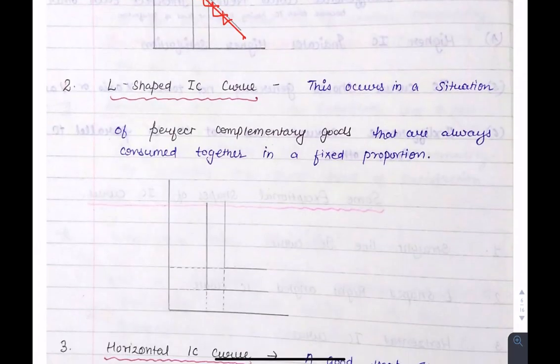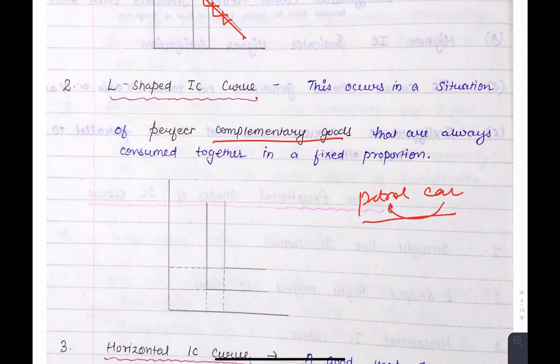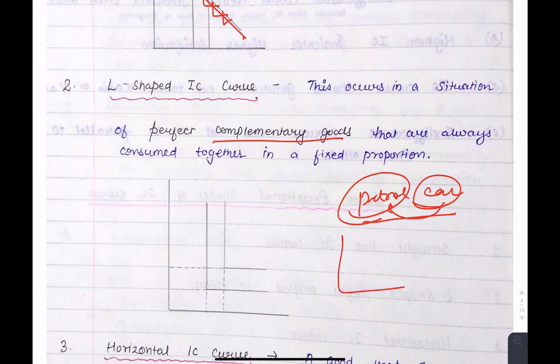An L-shaped indifference curve occurs for complementary goods, which we consume together. For example, petrol and car — if you have a car, you have to buy petrol. So for all consumption of the car, we have to buy petrol, which makes the IC curve L-shaped.